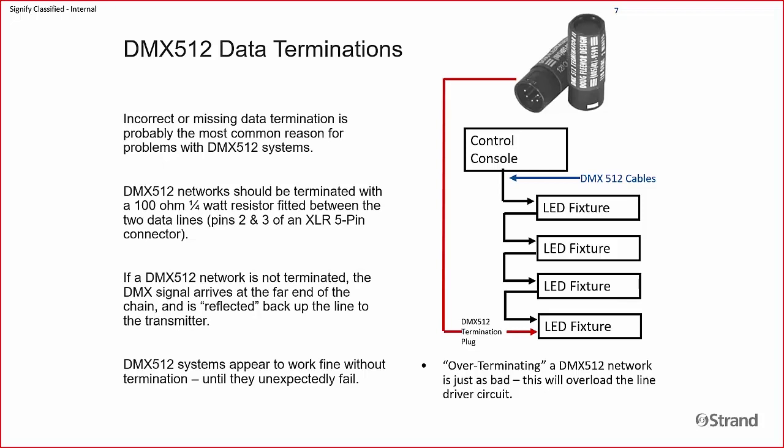Some people ask why not just terminate all lines from the get-go. Unfortunately, you can over-terminate a line. The data going down the line is at a certain strength which allows it to continue for the rated 1,500 feet of length. But sometimes it's too strong or too weak and it just doesn't work properly. This is more often a problem with older fixtures — I don't see these problems as much with newer fixtures, but it is still out there.